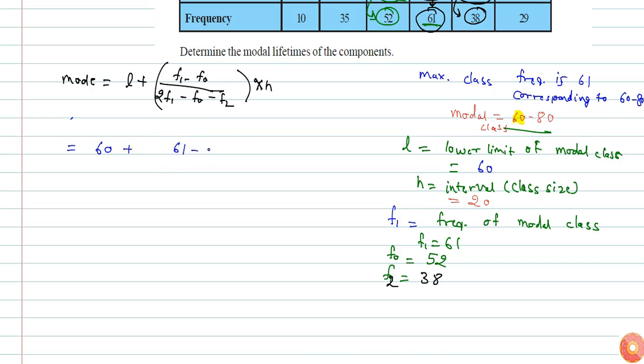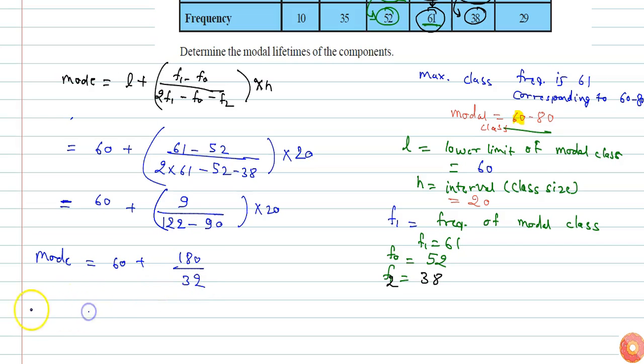61 minus f0 is 52, divided by 2 into 61 minus 52 minus 38, times h which is 20. So if I solve this, I get 60 plus 9 divided by 122 minus 90, plus 90 into 20. So mode will be 60 plus 180 divided by 32.